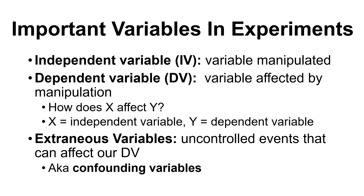We have some important variable definitions. The independent variable, or IV, is the variable being manipulated by the researchers. A great example is a drug trial: if we want some people to receive a drug and some people not to receive it, then receiving the drug — yes or no — is our independent variable. We could also have people receiving different doses: none, low, medium, and high. That's still our IV because the researcher determines who receives what dose.